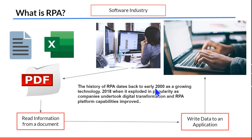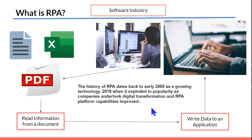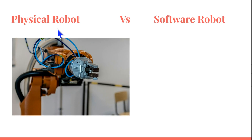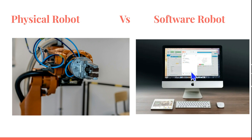The history of RPA dates back to the early 2000s as a growing technology. By 2018 it exploded in popularity — companies started undertaking digital transformation and RPA platform capabilities improved significantly. That is where the RPA name became very popular. By now you must have understood the difference: a physical robot is a mechanical machine, and a software robot is a piece of software inside the computer.